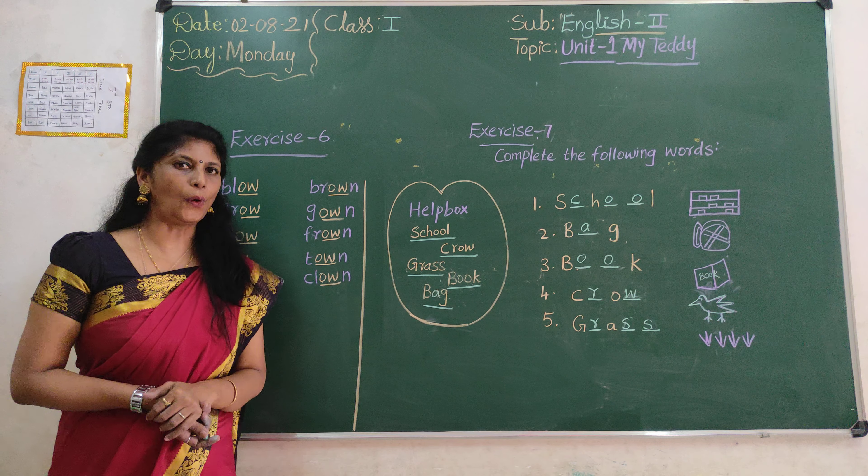Today we covered exercise six and exercise seven. Understood, children? Okay, once again: Blow — B-L-O-W, blow. G-R-O-W, grow. F-L-O-W, flow. T-O-W, toe. S-L-O-W, slow. B-R-O-W, brow. G-O-W, gown. F-R-O-W. T-O-W, tow. C-L-O-W, clown.